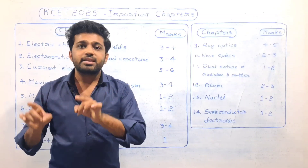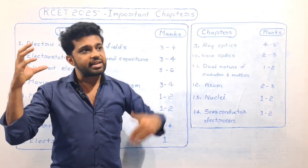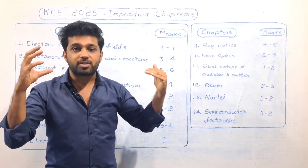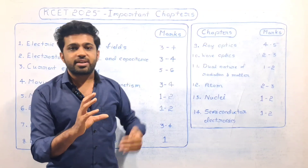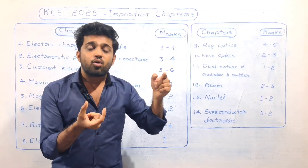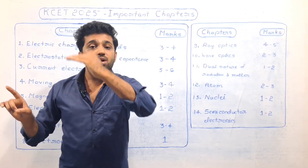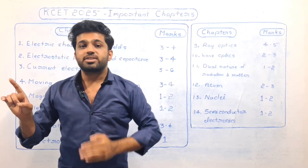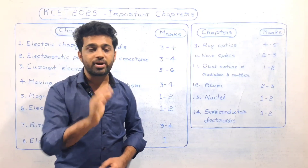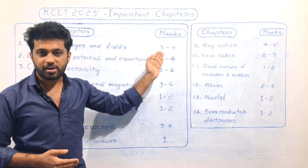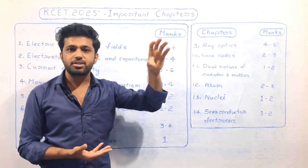In the KCET exam, in the 60-marks physics paper, every mark is important. Because of a 1 to 4 mark difference, the KCET rank can change by 200 to 300 ranks. So this chapter is important. There are 60 marks in physics, and the KCET rank difference between marks can be very significant — so let's prepare. The concept is already clear; just solve and practice MCQs.